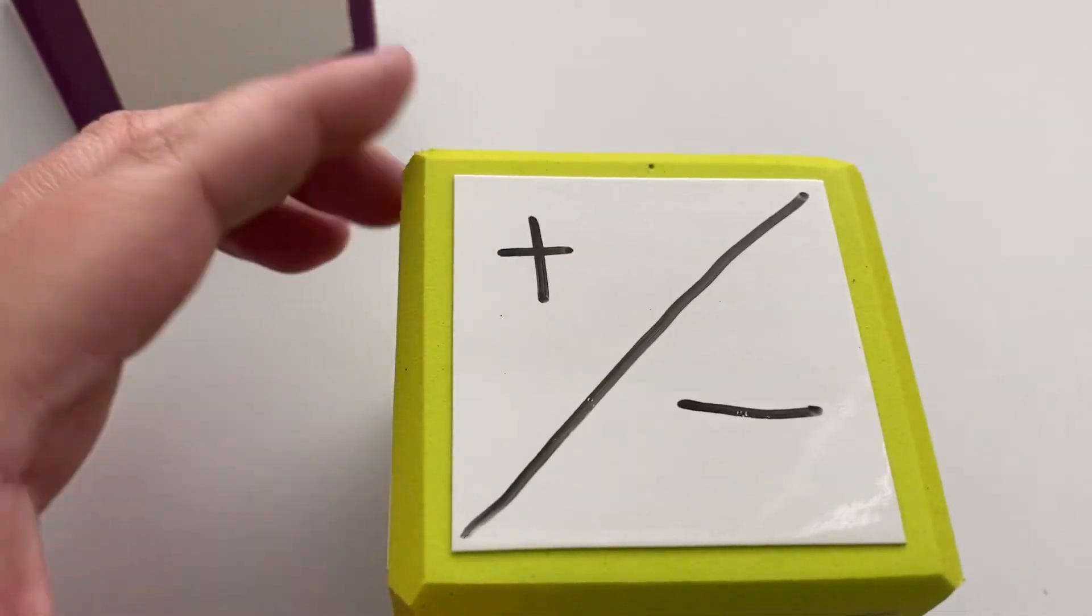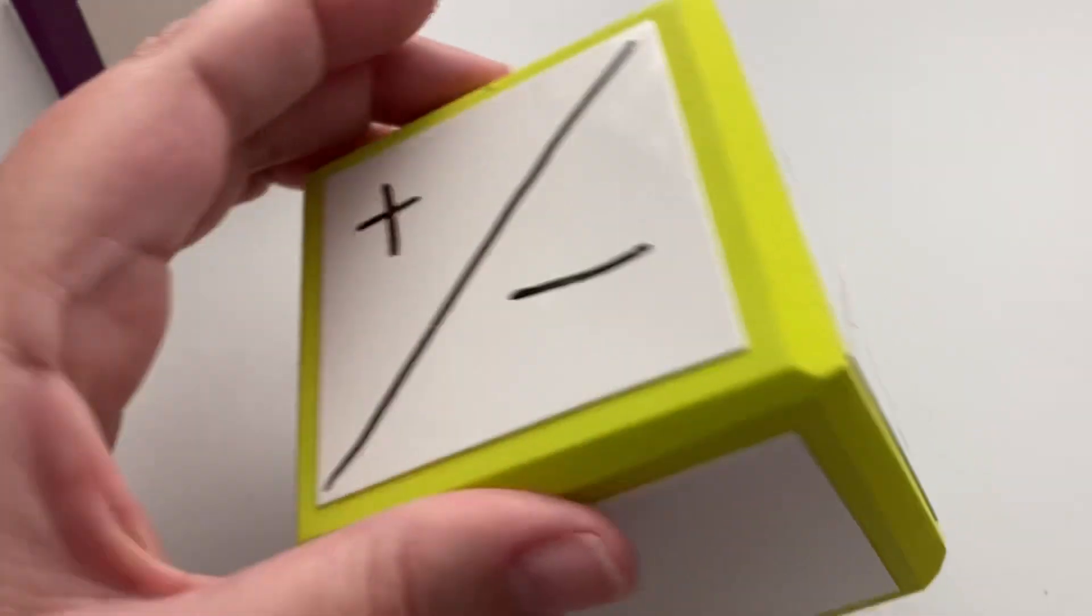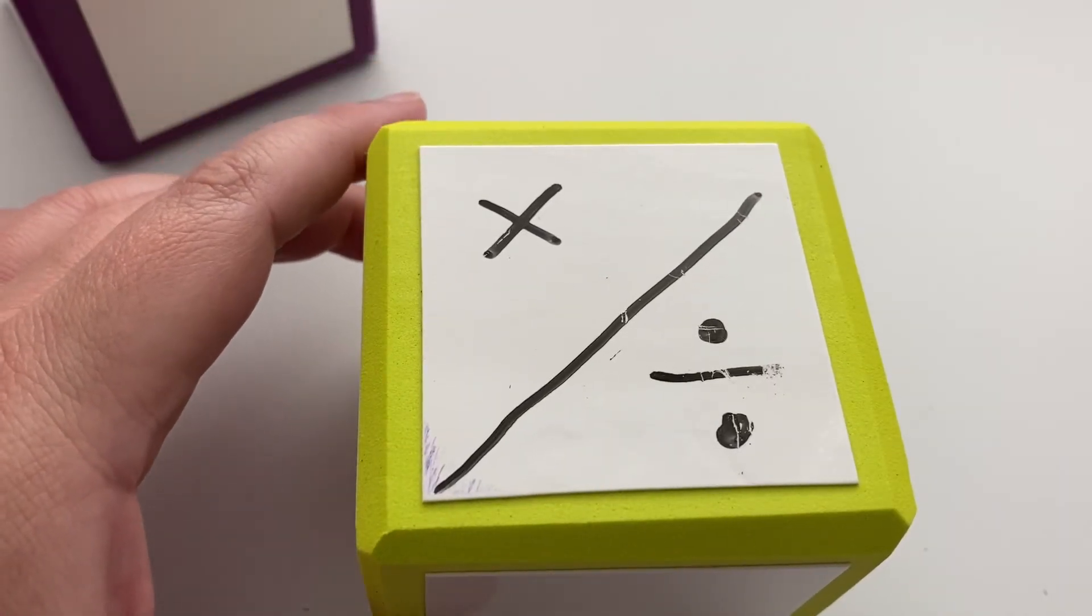Our inverse operations are plus and minus—they work together as inverses of each other. Then we have multiplying and dividing, which are also inverse operations we'll be using.